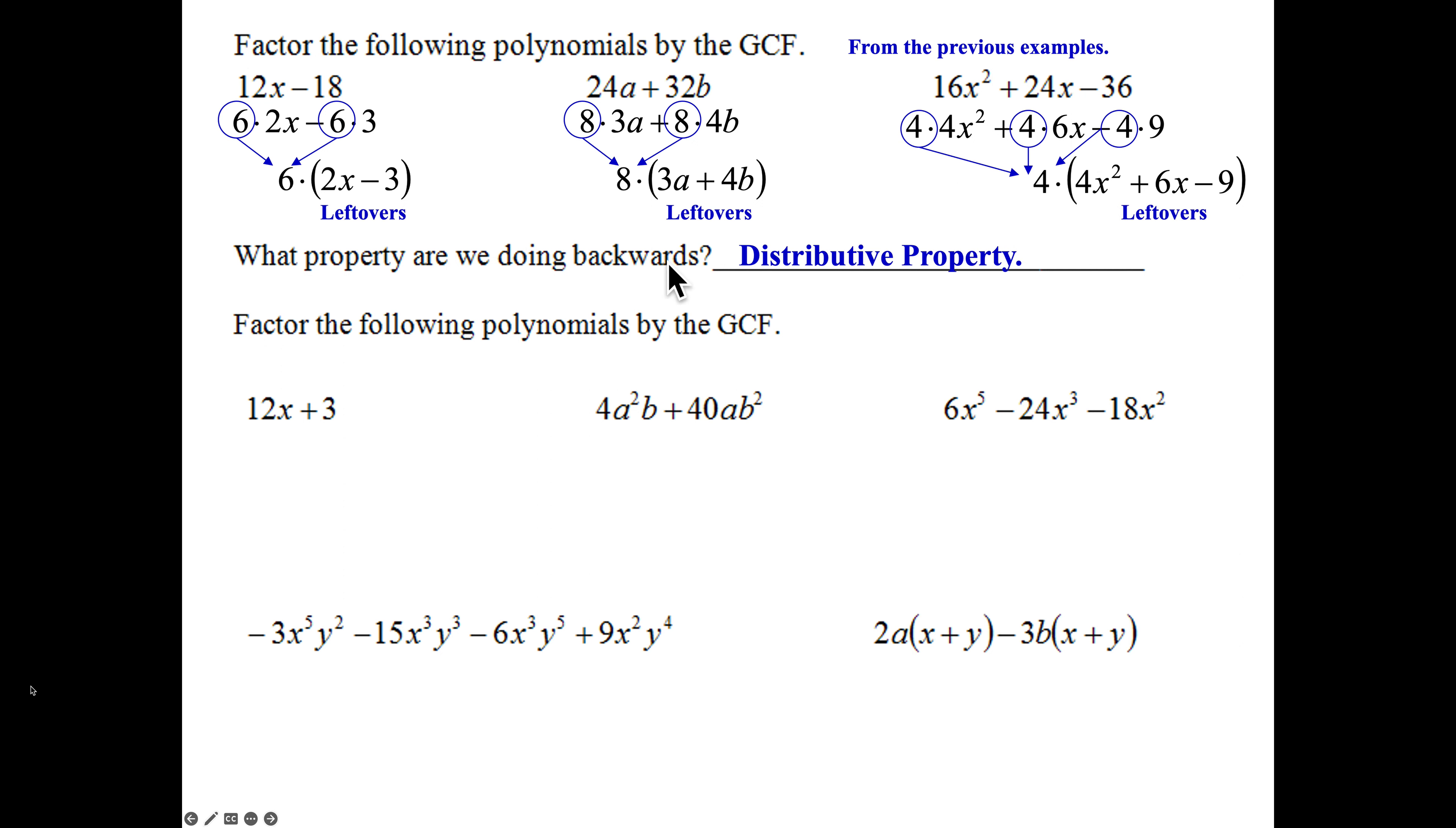And if you look at this closely, we are actually doing the distributive property backwards. Multiplying in the 6 gets you the 12x minus 18. Dividing the 6 out to the front of the parentheses from every term is finding your GCF and rewriting it in factored form. 2 terms, 1 term because of the multiplication. 2 terms, 1 term because of the multiplication. 3 terms, 1 term because of that multiplication right there.